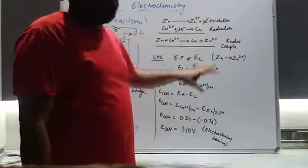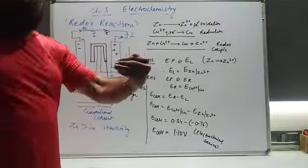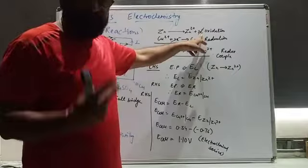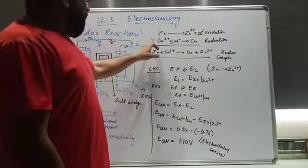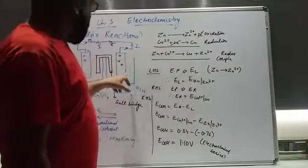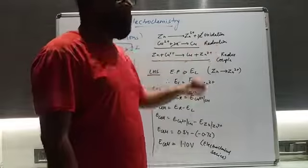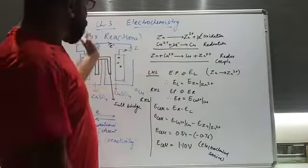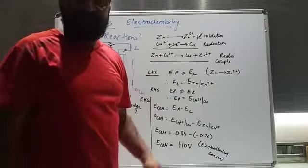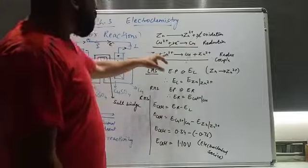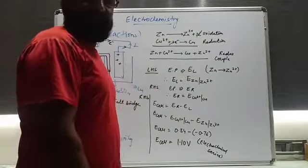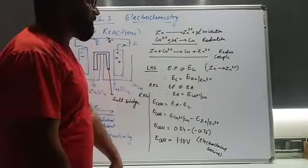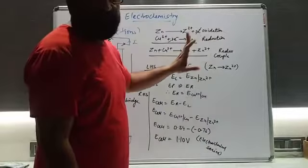So this is the basic reaction taking place here. Zinc donates electrons and is converted to Zn²⁺ — it undergoes the oxidation reaction. Now for the second half: two electrons are gained by the Cu²⁺ ions present in the copper sulfate solution, and Cu²⁺ is converted into copper — this is called reduction reaction. If we combine these two half-reactions, the electrons cancel, and we get the overall redox couple reaction: Zn + Cu²⁺ → Cu + Zn²⁺.